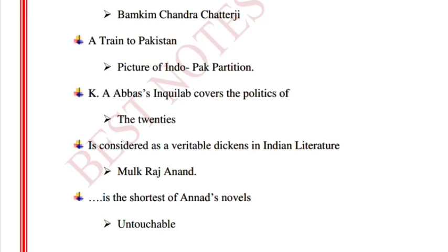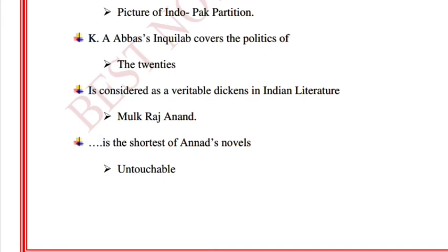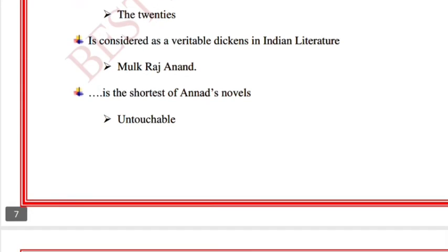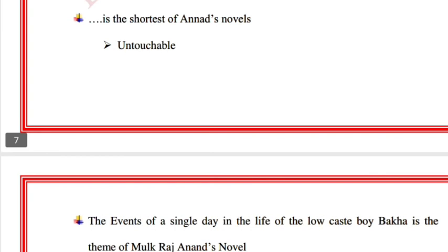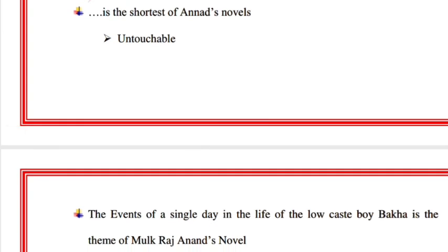K. Abbas's work covers the politics of the 1920s. Who is considered the Dickens of Indian literature? Mulk Raj Anand. Which work is the shortest of Anand's novels? 'Untouchable.'